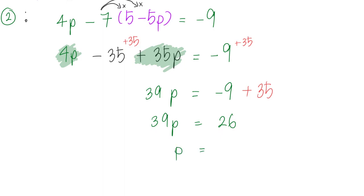Leave your answer in simplest form. I divide by 39 on both sides, and the answer is P equals 2 over 3.